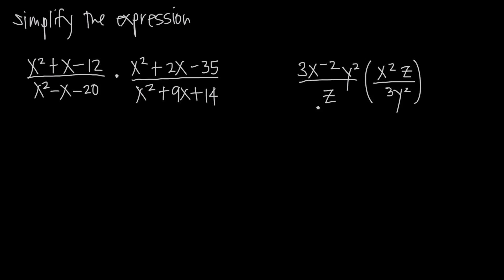You might be able to cancel within a fraction. For example, if we had y squared in the numerator of this fraction and y squared in the denominator, we'd be able to cancel that out and it would make our multiplication simpler. Or you might be able to cancel across fractions. Because we're multiplying these together, if you have something in the numerator of one fraction that's in the denominator of the other fraction, you'll be able to cancel those.